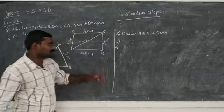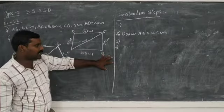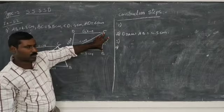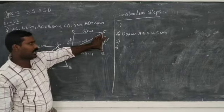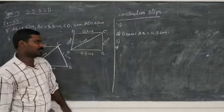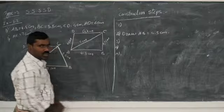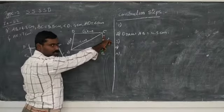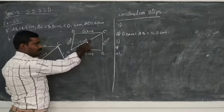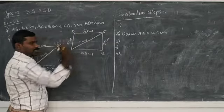Fourth step: take 5.5 centimeters radius with center B, draw one more arc to cut the first arc, and the intersection point is C. Fifth step: join BC and AC.